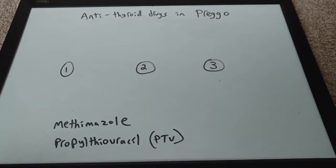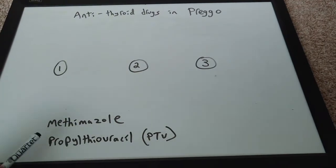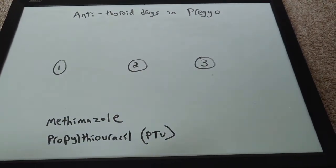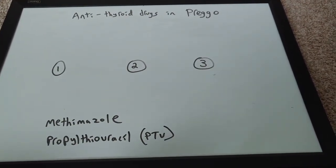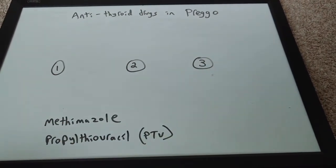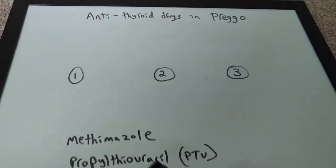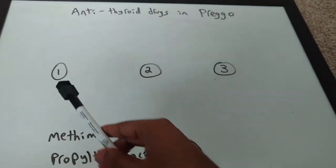This video is on antithyroid drugs in pregnancy. There are two drugs: methamazole and PTU. URL has tons of questions asking about which drug to use in which trimester and the side effects. So this is the first trimester.